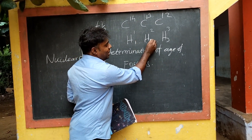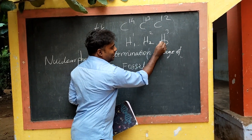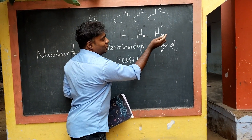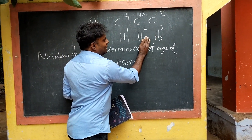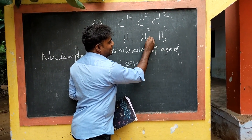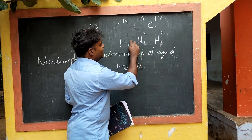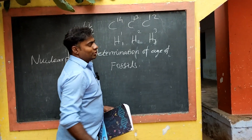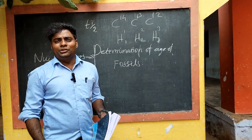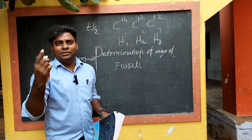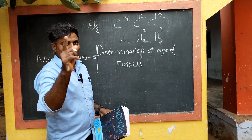Let's look at hydrogen. The atomic number is 1, with mass numbers 2 and 3. We have protium, deuterium, and tritium as isotopes of hydrogen.